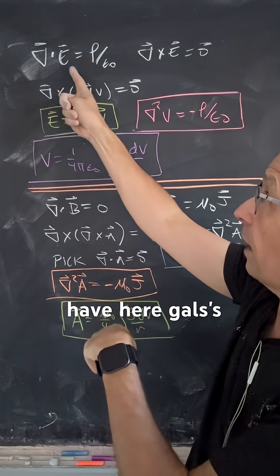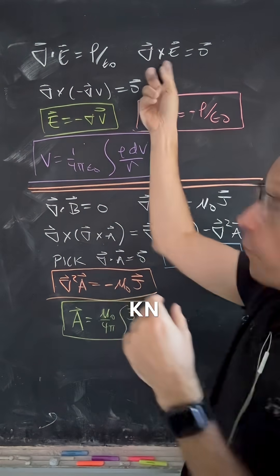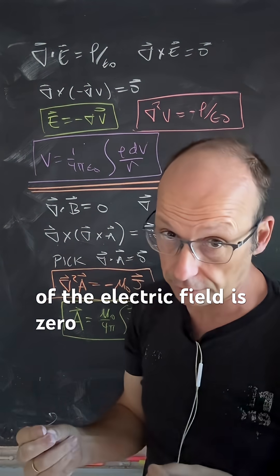So we have here Gauss's law that says that the divergence of electric field is the charge density divided by epsilon naught. We also know that the curl of the electric field is zero.